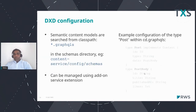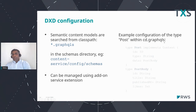When creating the GraphQL schemas, you need to make sure they will be searchable in the class path. You might need to copy them into your content service, where your content service is configured under the configured folder — there is a 'schemas' folder. That's where you need to place your GraphQL schema. For example, you create a post type, define it, then extend it with an extension called GraphQL SDL, and copy this into the configs and schemas folder.